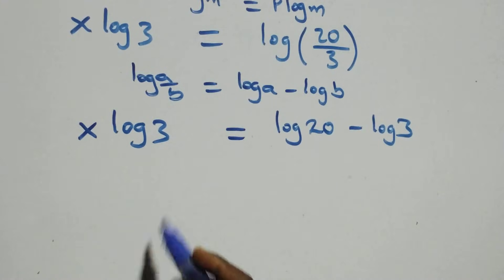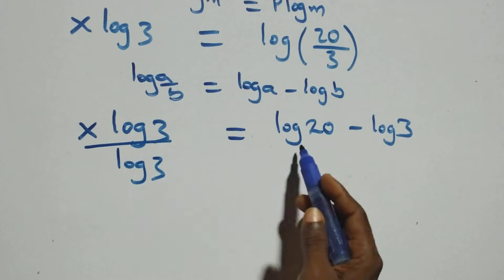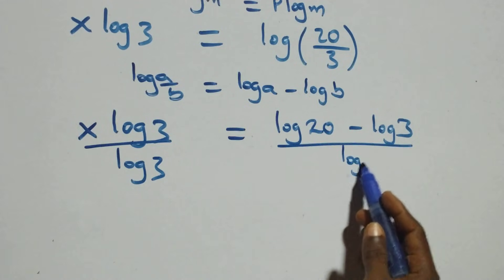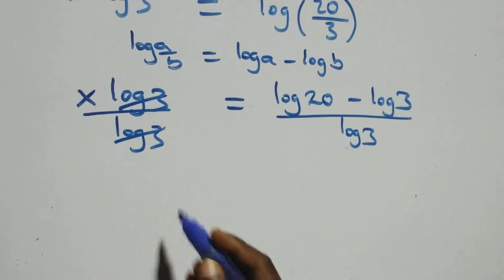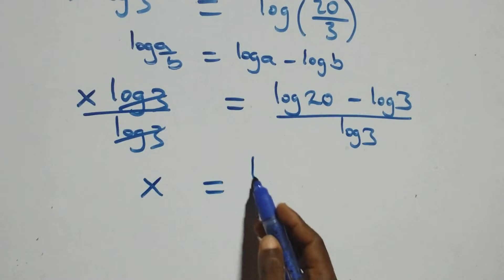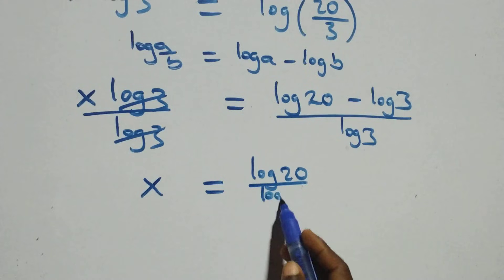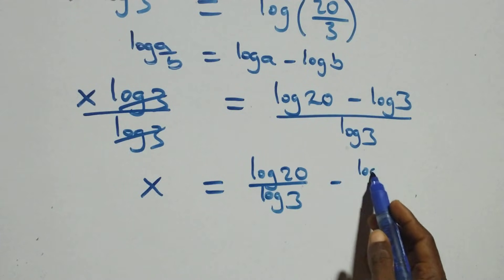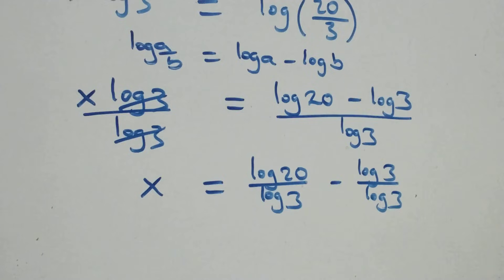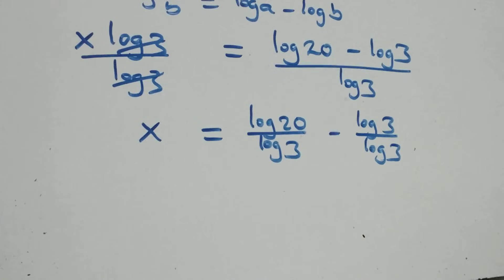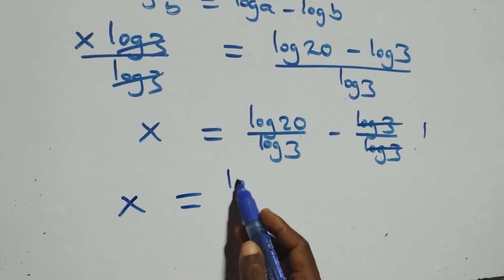Now we divide both sides by log 3. The log 3 terms cancel each other, and we have x equals to log 20 over log 3 minus log 3 over log 3. Since log 3 over log 3 equals 1, this implies x equals to log 20 over log 3 minus 1.